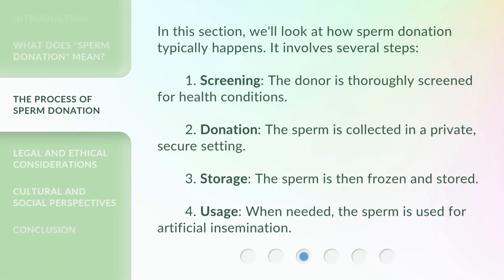In this section, we'll look at how sperm donation typically happens. It involves several steps. 1. Screening: the donor is thoroughly screened for health conditions. 2. Donation: the sperm is collected in a private, secure setting. 3. Storage: the sperm is then frozen and stored. 4. Usage: when needed, the sperm is used for artificial insemination.